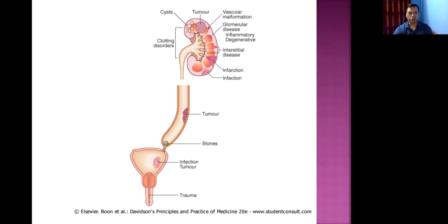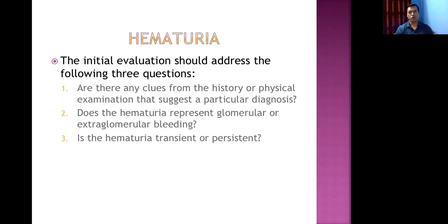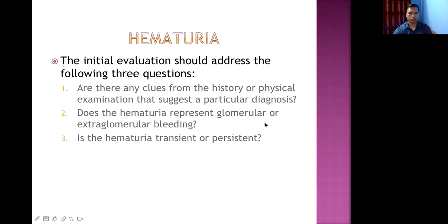Urethral causes include trauma (such as from road traffic accidents or pelvic injury) and sexually transmitted infections or urethritis. When evaluating a patient with hematuria, first take a thorough history covering the symptoms discussed. Key questions to ask: Are there clues suggesting a particular diagnosis? Is the hematuria glomerular or extra-glomerular in origin? Is it transient or persistent?